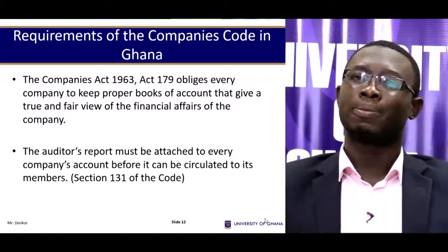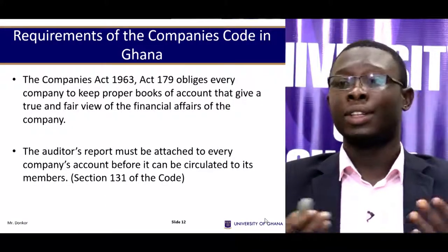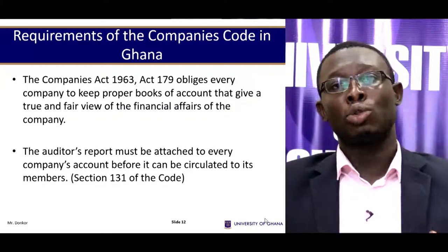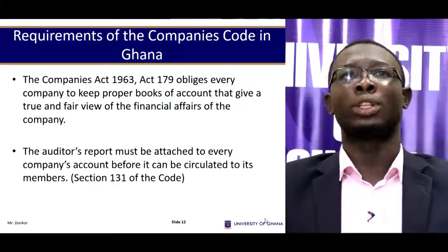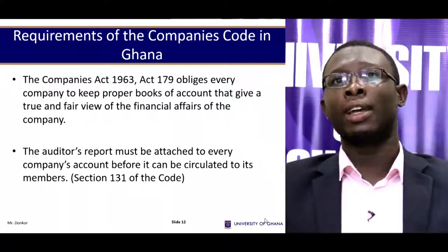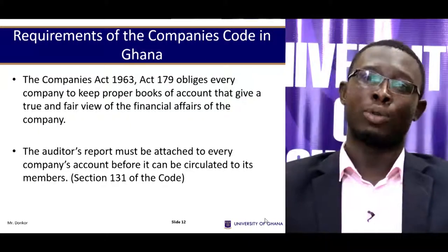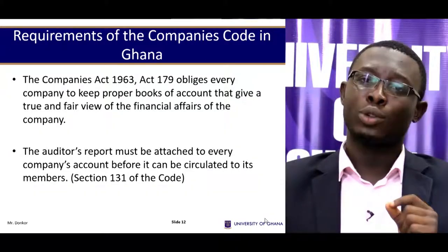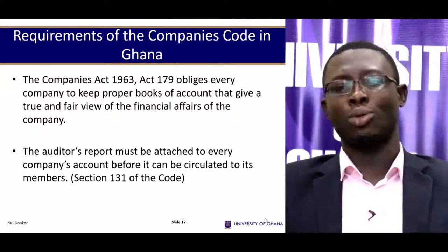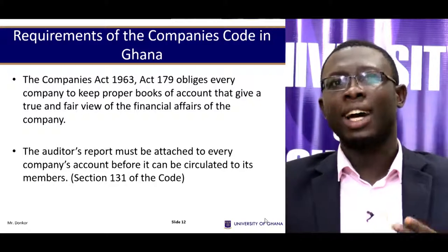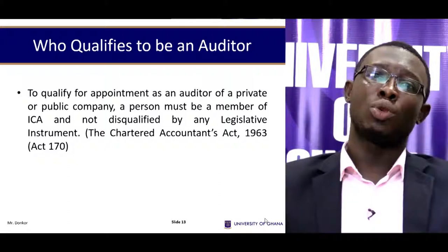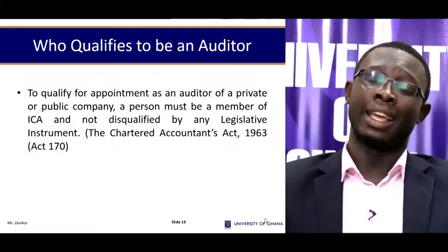Requirements of the Companies Code in Ghana. The Companies Code, Act 179 of 1963, obliges every company to keep proper books of account. To keep proper books of account, auditors must audit them. The auditor's report must be attached to every company's accounts before they can be circulated to members. It is important, based on this code, to know who qualifies as an auditor in Ghana.